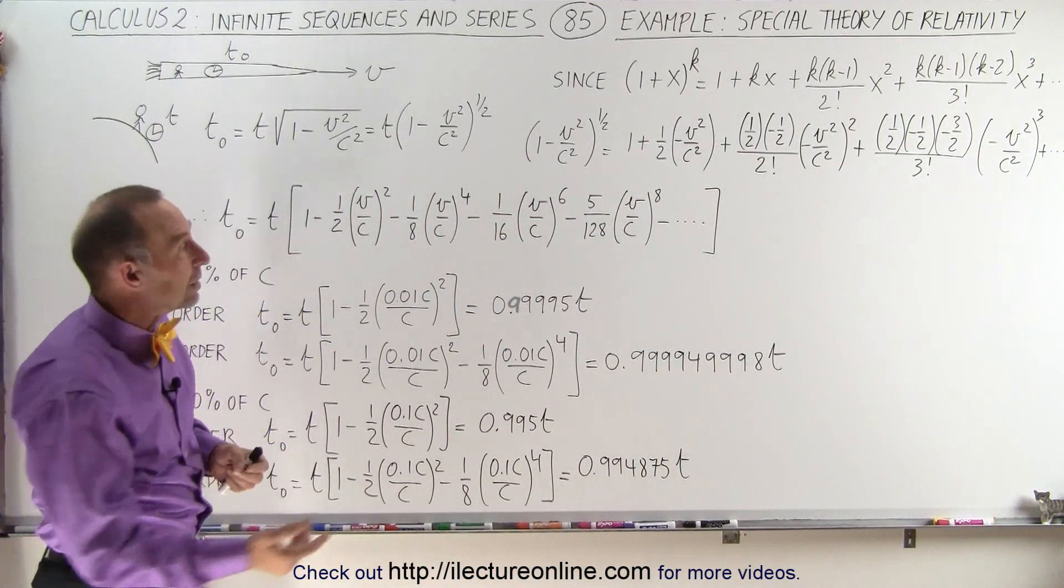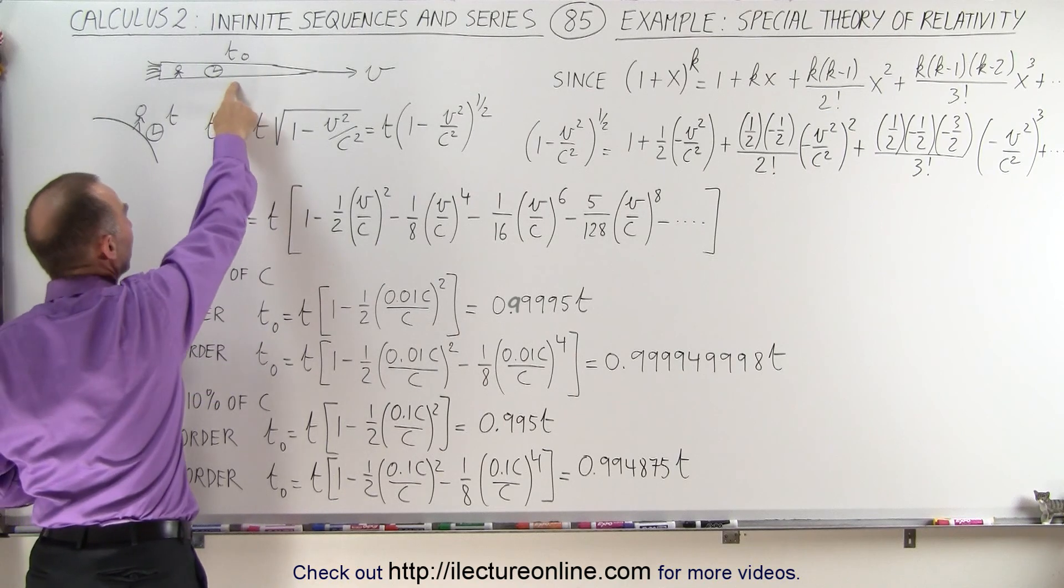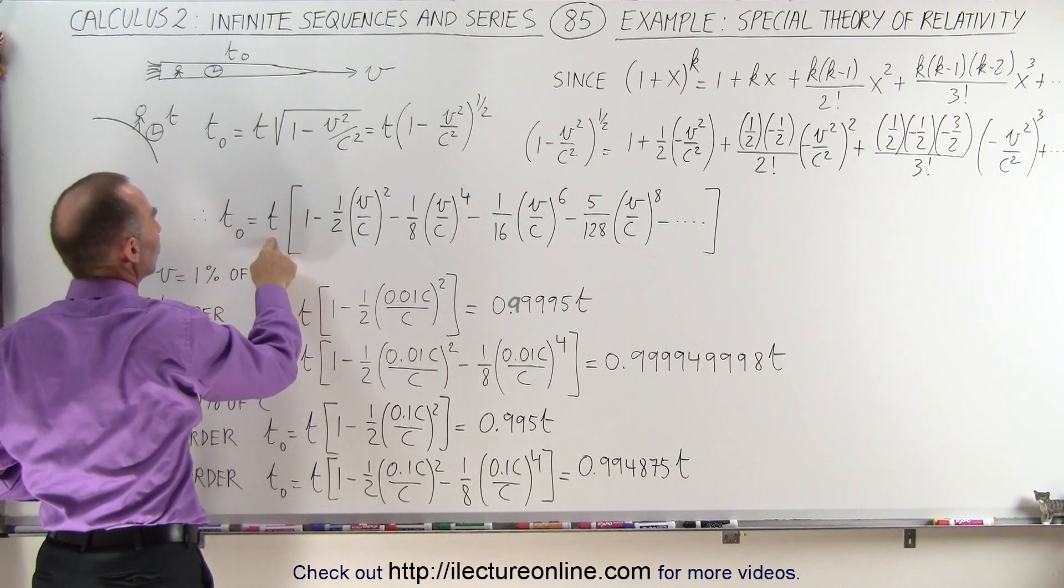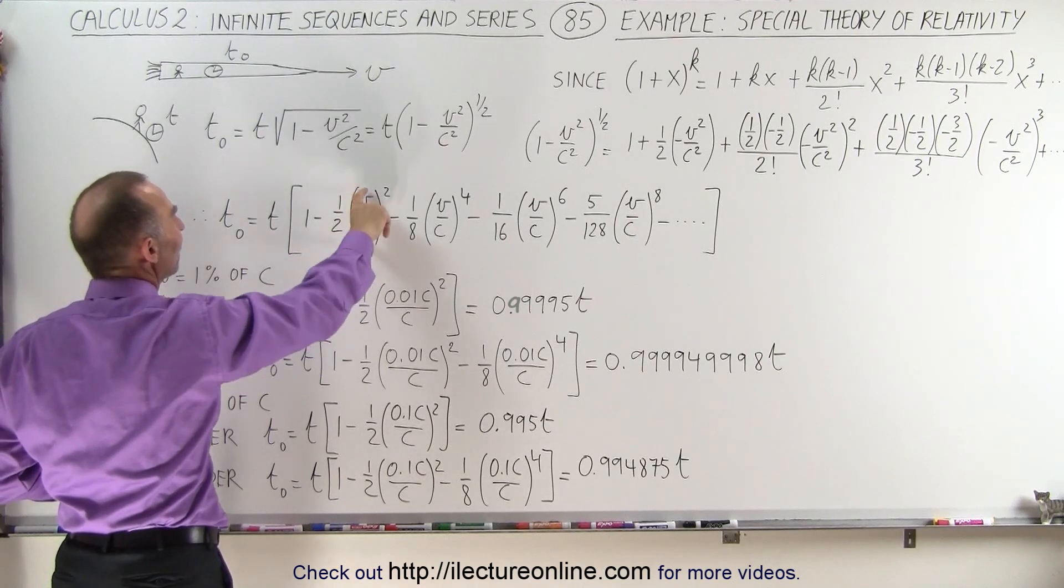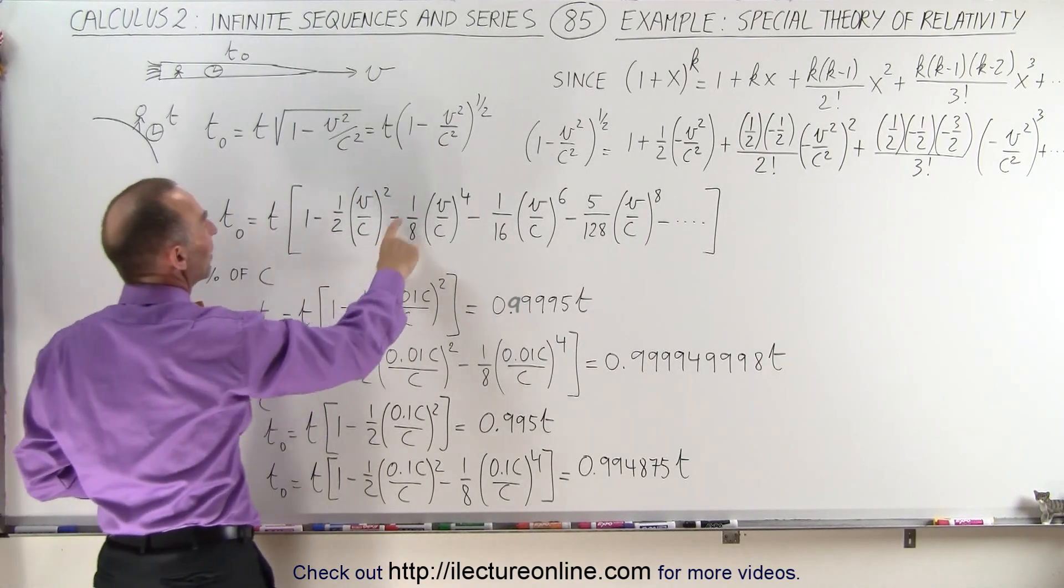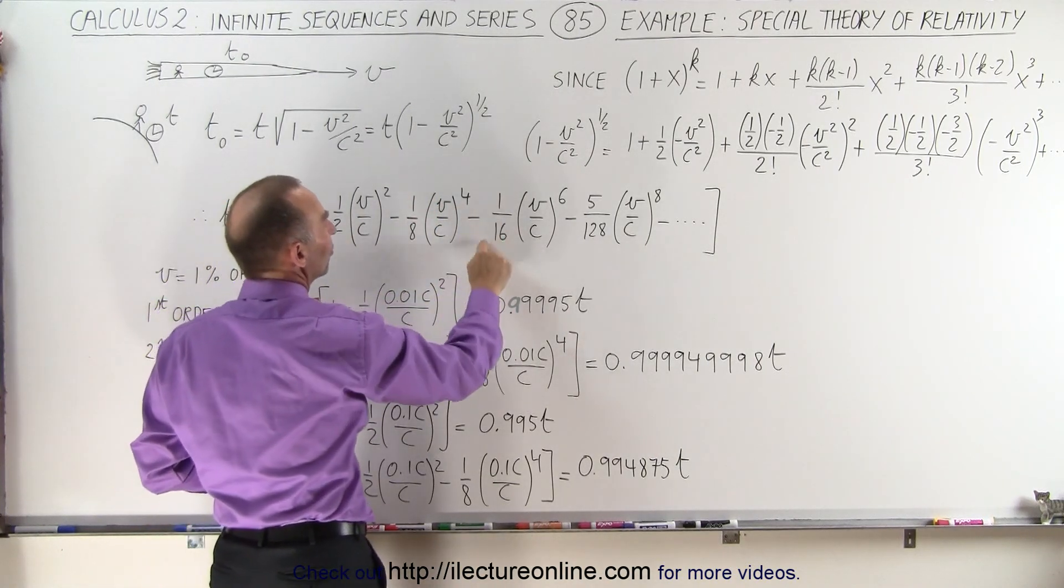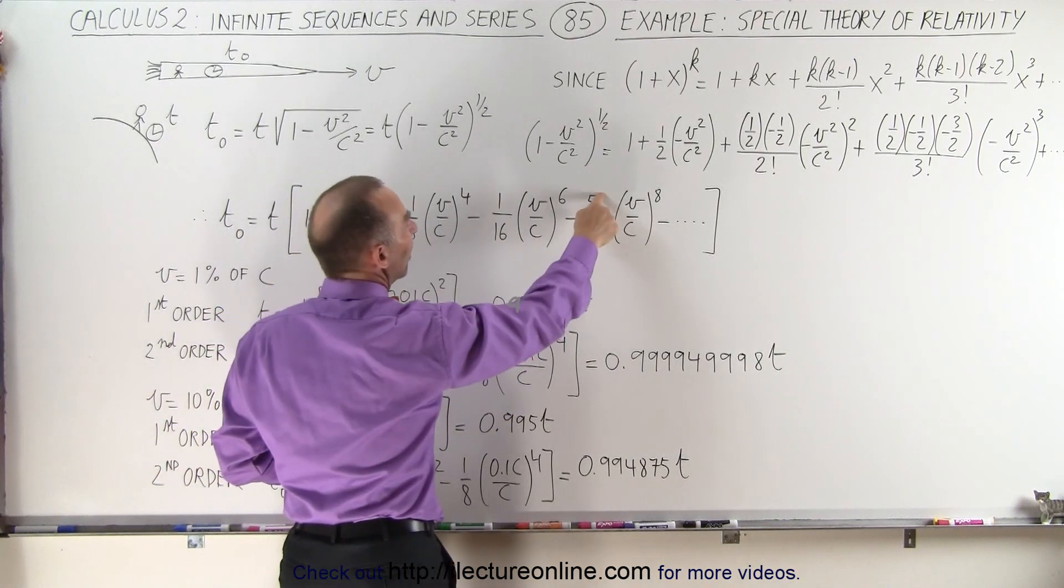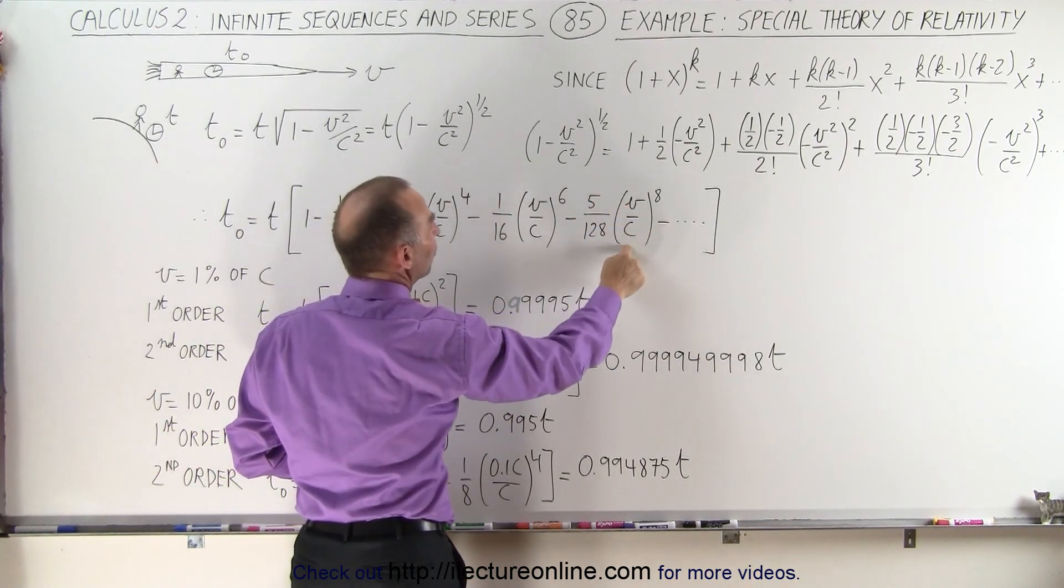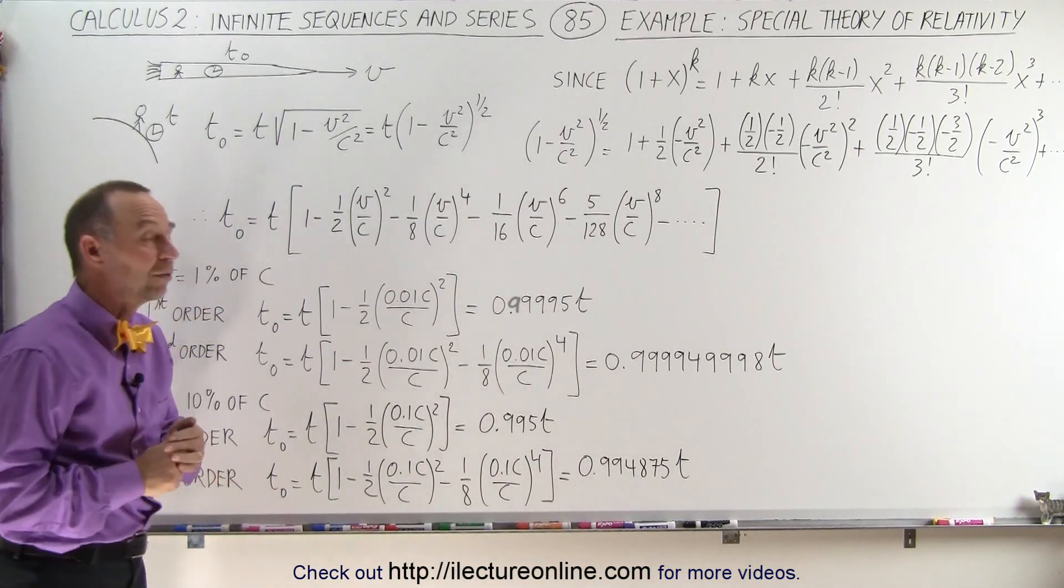And if we then evaluate the constants, we can say that the time as measured on the spacecraft is equal to the time as measured on the earth times the quantity 1 minus 1/2 (v/c)² minus 1/8 (v/c)⁴ minus 1/16 (v/c)⁶ minus 5/128 (v/c)⁸ and so forth. And we can of course calculate as many terms as we want.